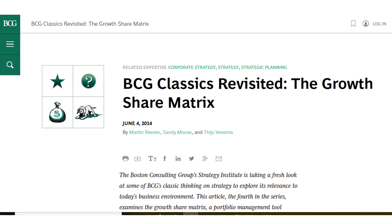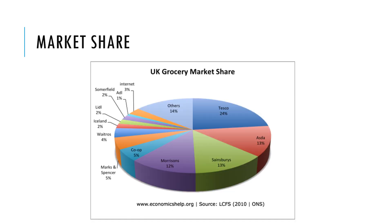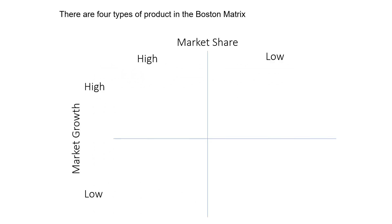The Boston Consulting Group developed this way of analyzing your product portfolio. You place your products into a grid with four characteristics. The axes correspond: one to market growth — for example, how much is being spent across the market in online game revenue — and on the other axis, market share, such as the percentage of all sales in the UK grocery market that one particular business holds.